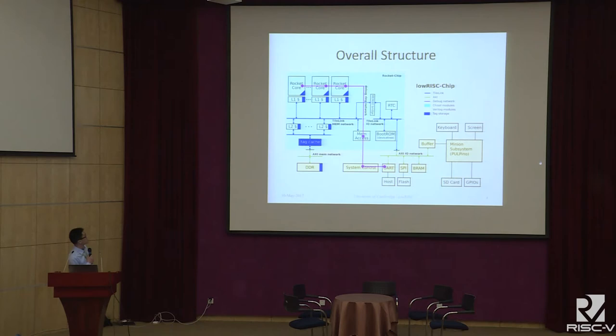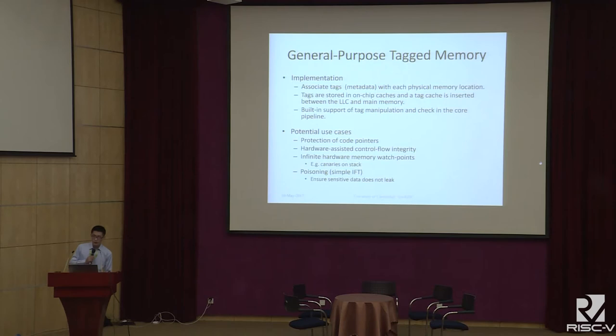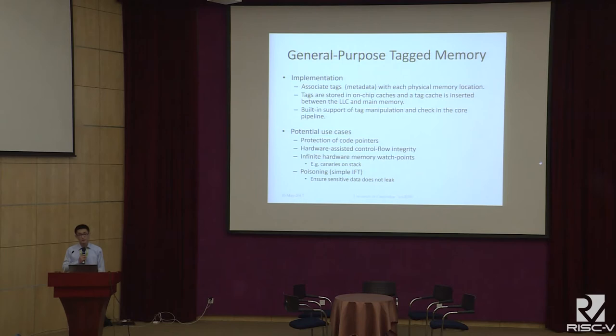In previous releases, the tag cache was between the L2 and DRAM memory. This time, we have added units called tag manipulation and check into the core pipeline. That means you have detailed control of how the tags are propagated from the register file to memory, from source register, and even to the PC. We also added checkers — these are checks that run with the tags and can raise various exceptions.